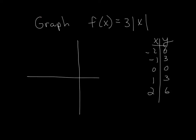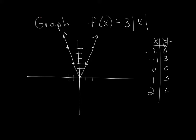Now let's see what that graph looks like: negative two maps to six, negative one to three, zero to zero, one to three, two to six. Connect the dots and it's pretty simple. Hopefully you can see what happened — this number being a three makes the graph skinnier. The normal V would have been spread out wider, but the bigger this number gets, the more the graph closes in and gets skinnier.